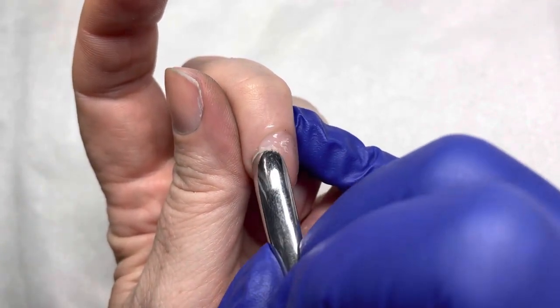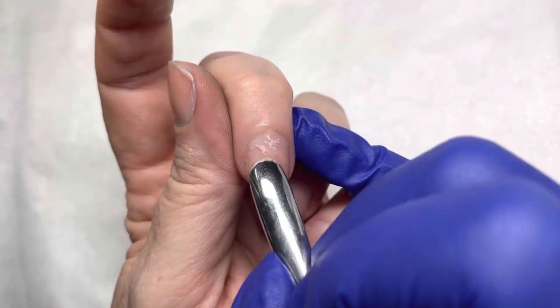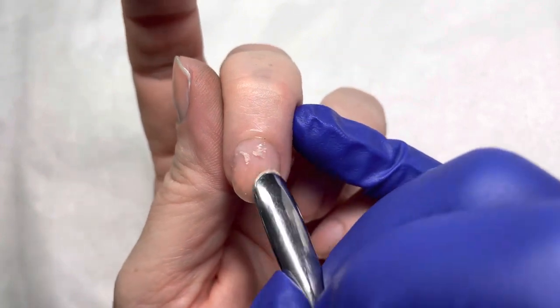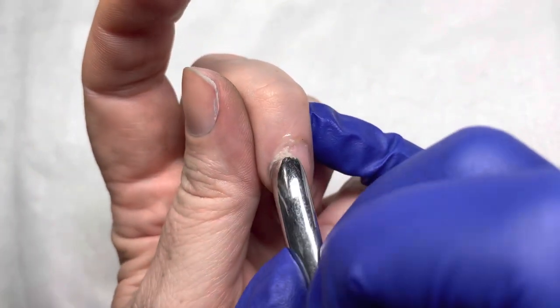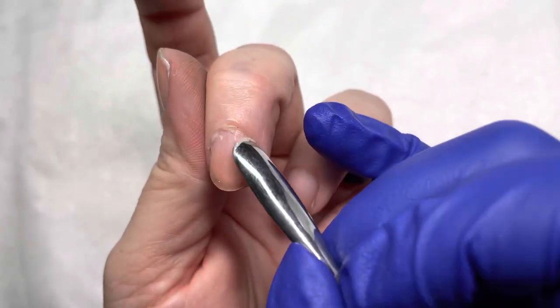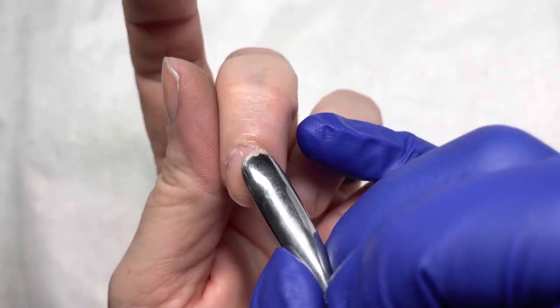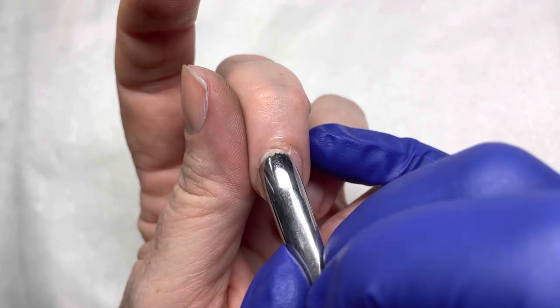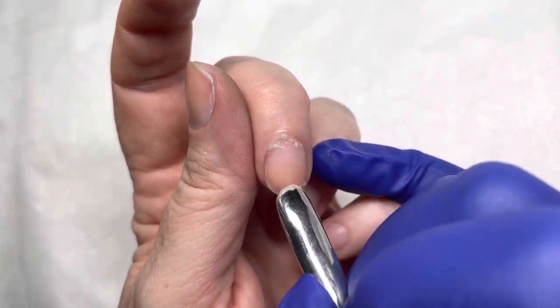To pick up all of the cuticle from the entire nail plate that has grown out with the nail. And I'm going in slow motion so that you can see the tool gently lift and separate the cuticle.